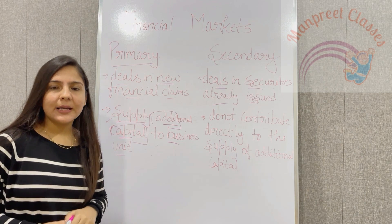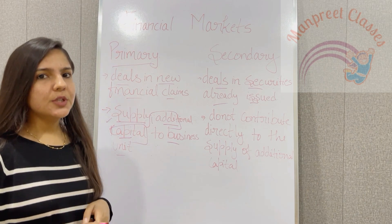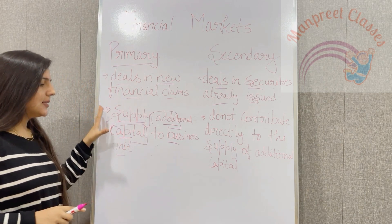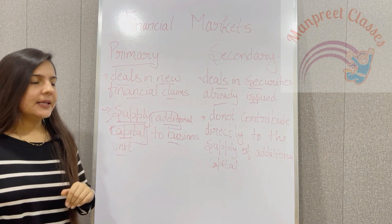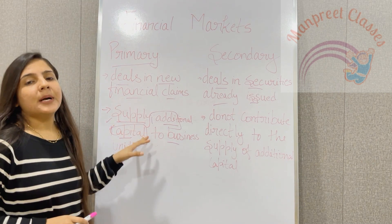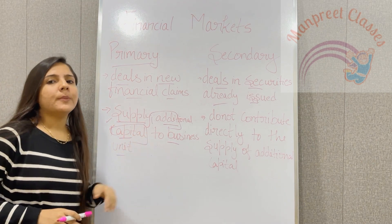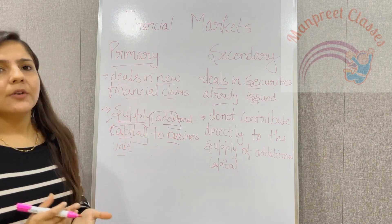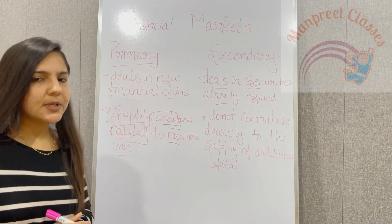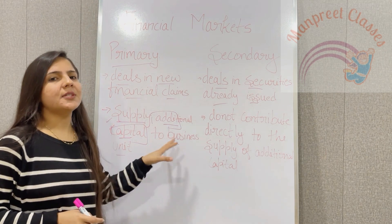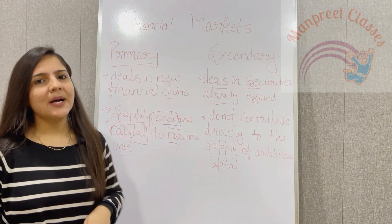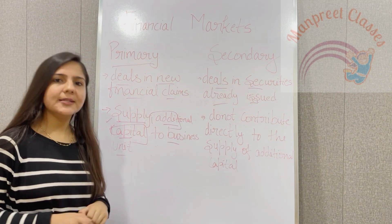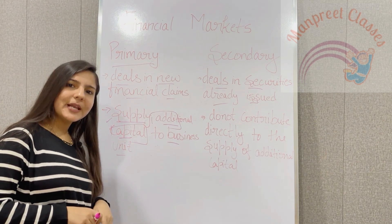The other name of primary market is 'new issue market' because new securities and new financial claims are issued in this market. Primary market also mobilizes savings as it is the issuer of new financial claims. This completes the topic of primary market and secondary market.